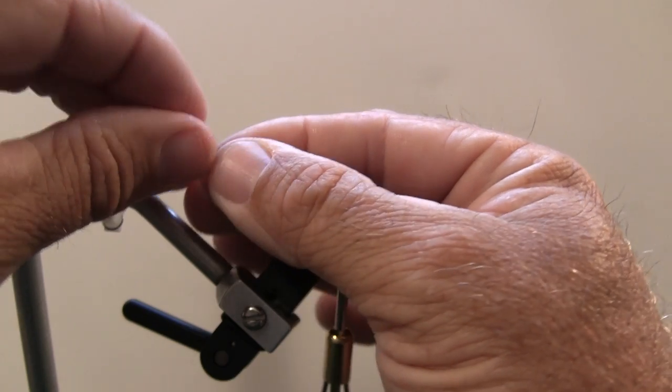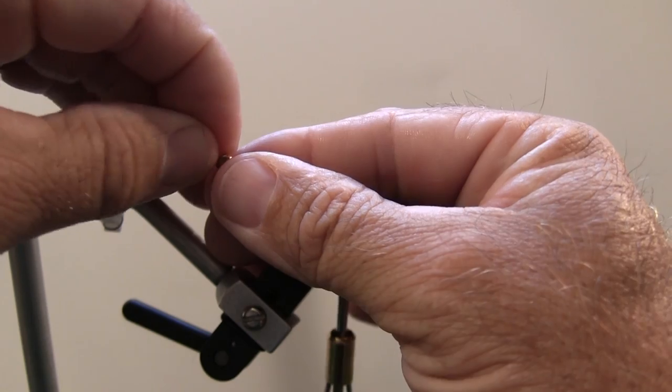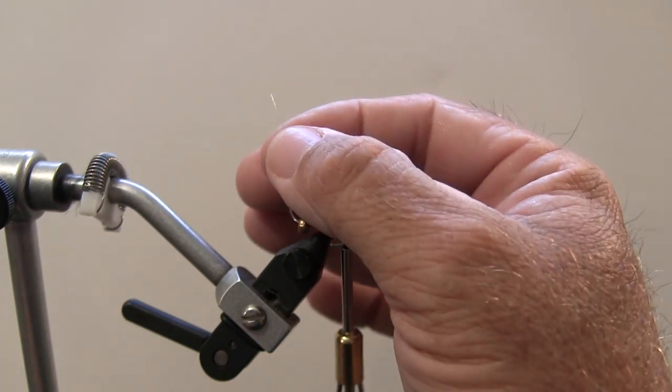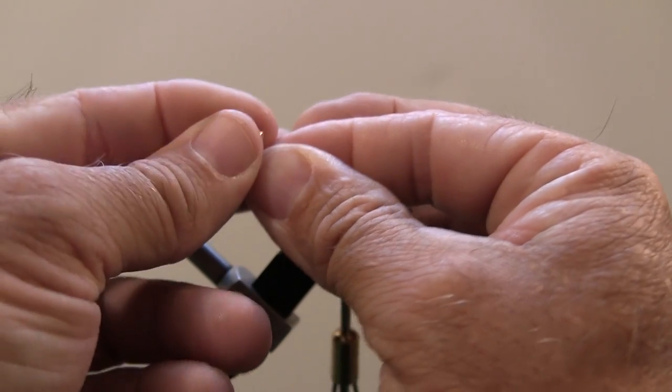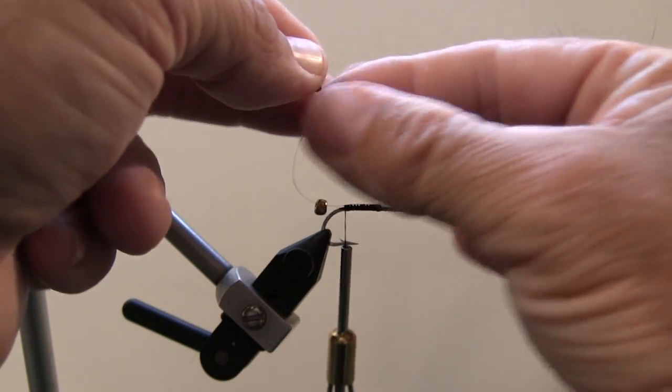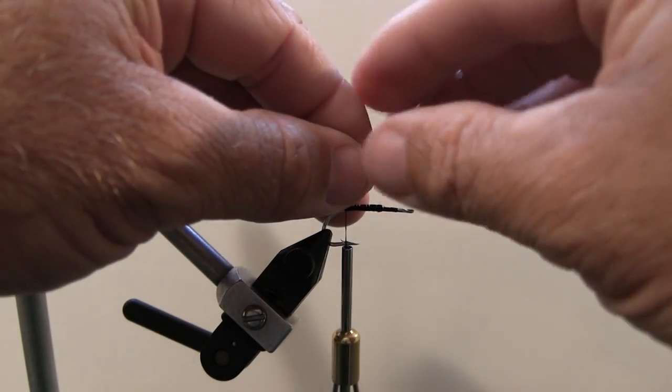This is for me the hardest part of this whole fly, is threading these things on. I'm going to use two. It's just enough to make a little bit of noise. I don't need to make a lot of noise with this thing, just enough to get them looking in the direction of this fly. I'm going to slip them onto that mono.